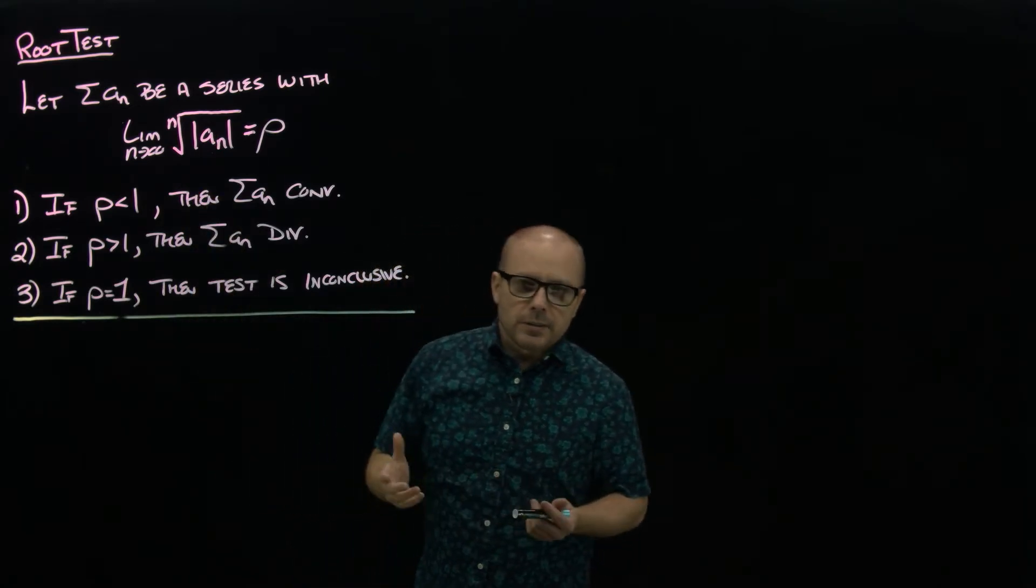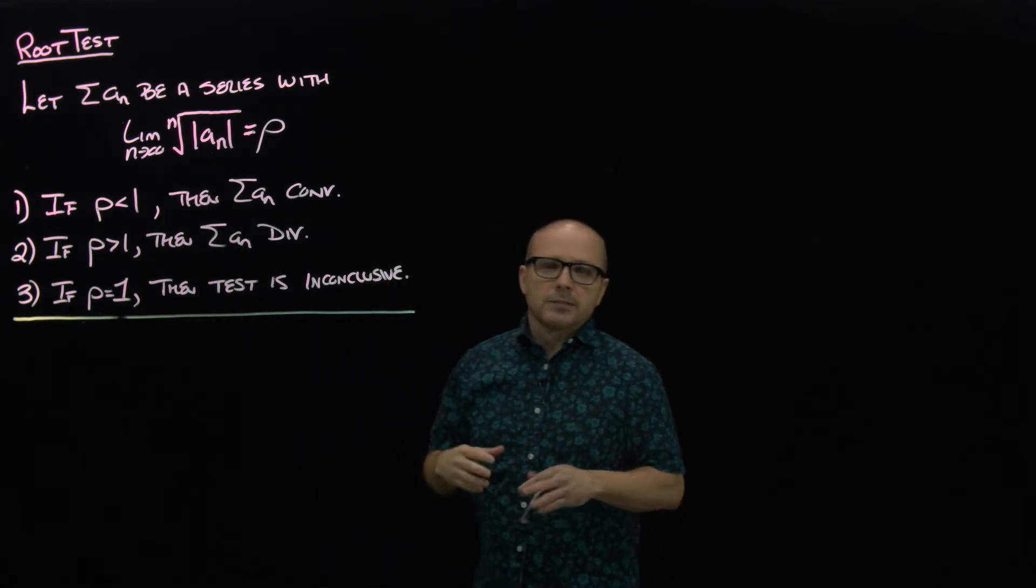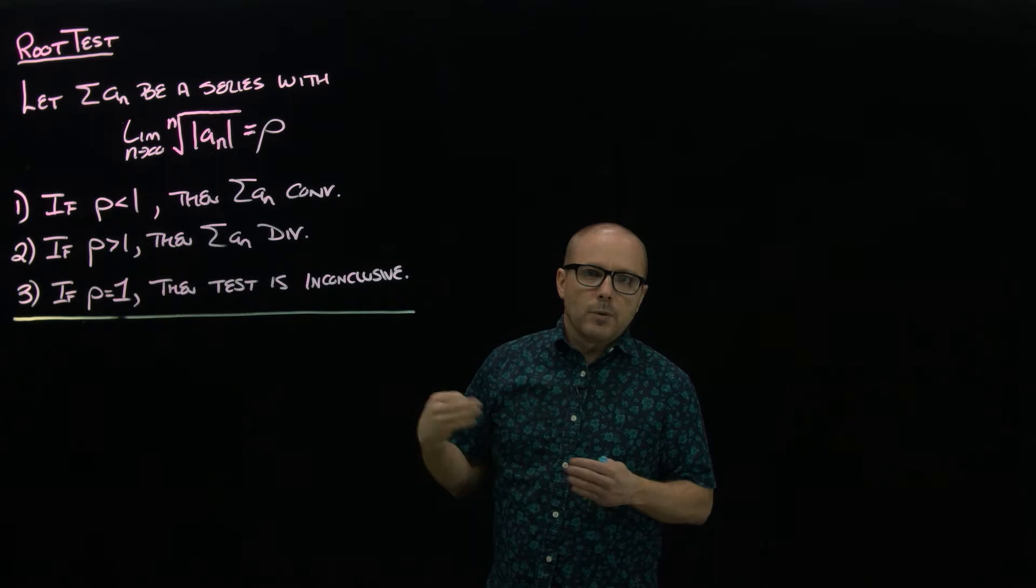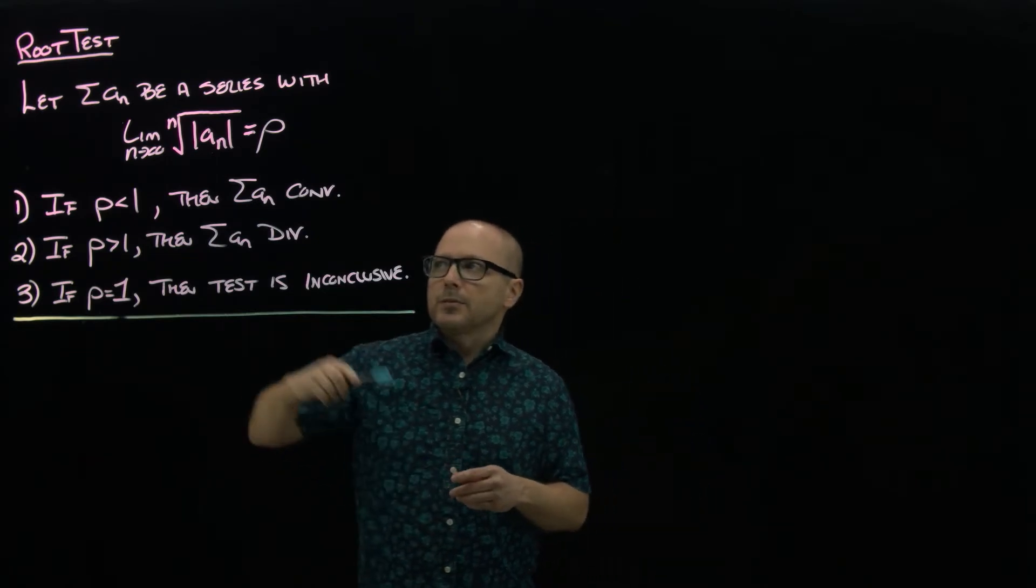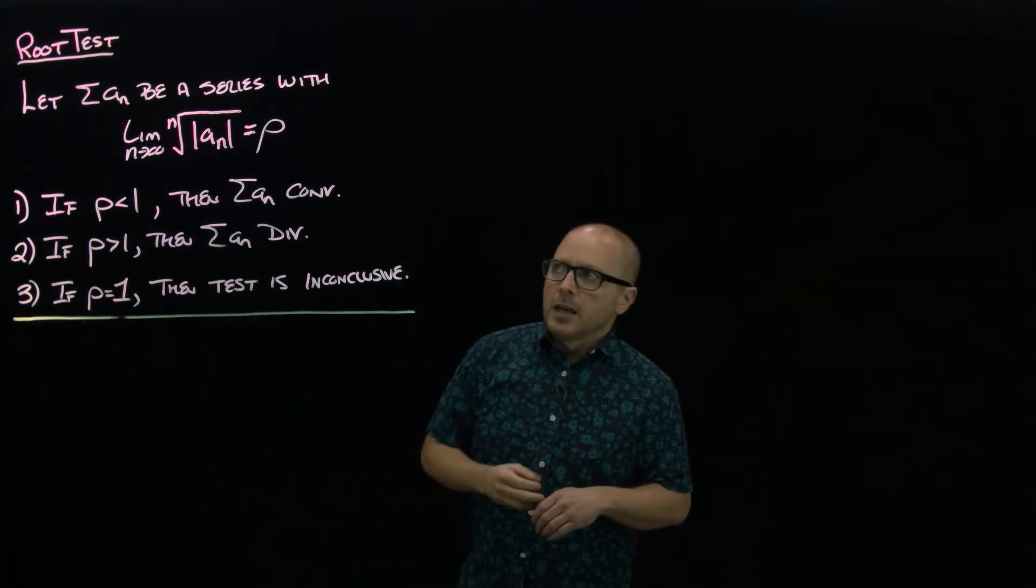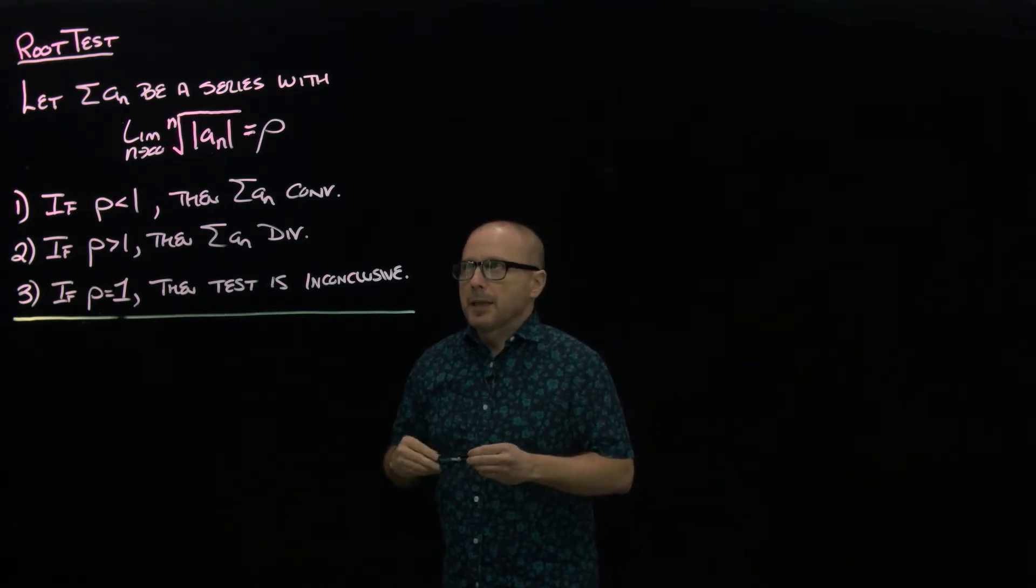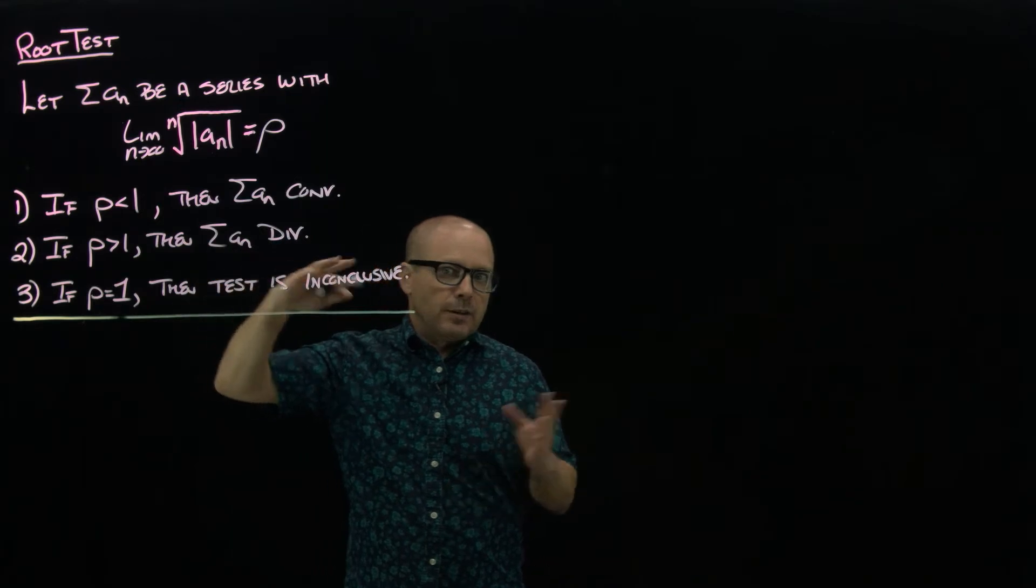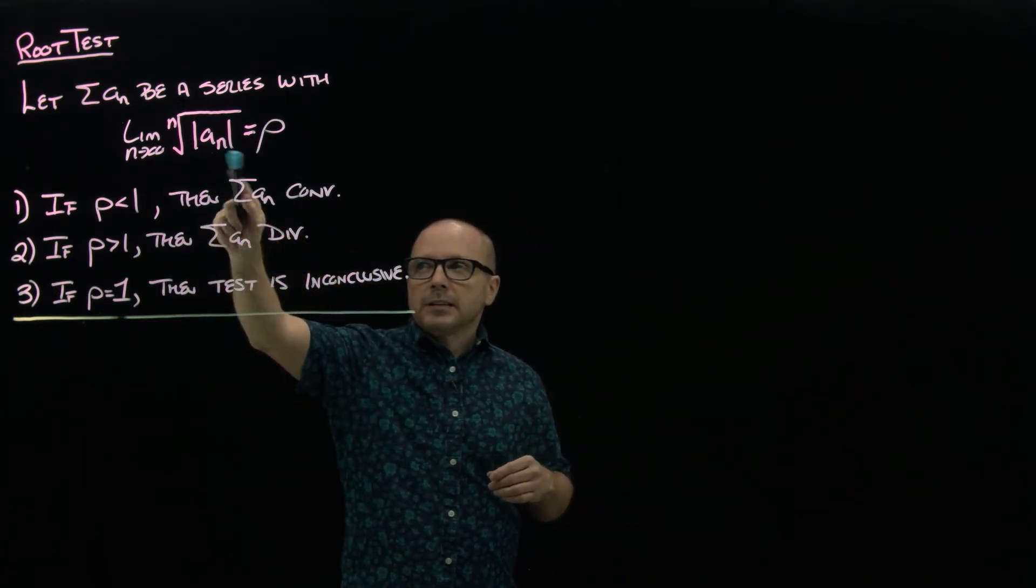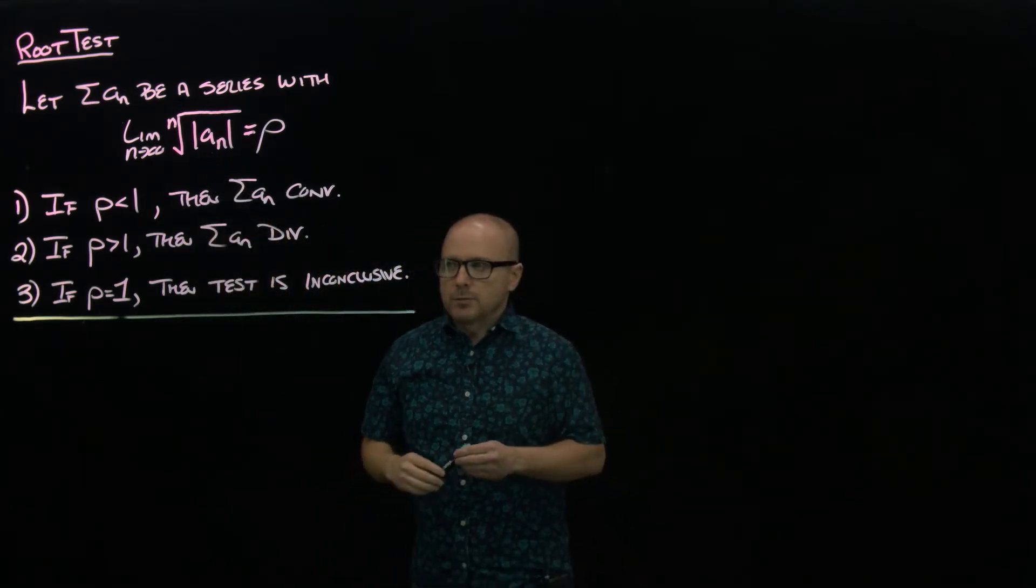What's really different is how we define that ρ. So instead of taking the limit of the ratio of successive terms in absolute value, we take the limit of the nth root of the absolute value of the terms. Again, the series can be anything, so they don't have to be positive terms—the absolute value is taking care of that for us.